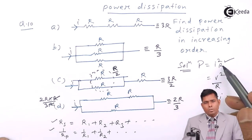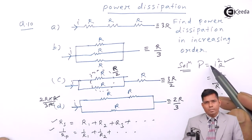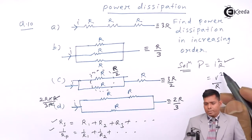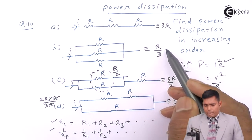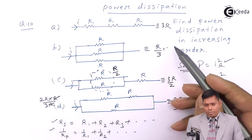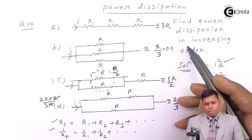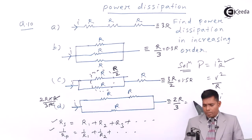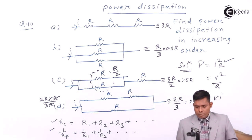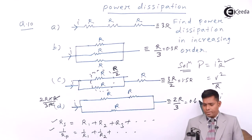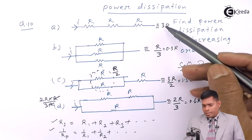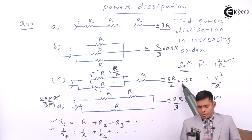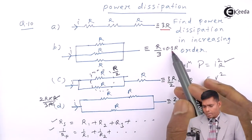Out of the four combinations, we check which has the highest resistance. Combination A = 3R, combination B = R/3 ≈ 0.33R, combination C = 3R/2 = 1.5R, and combination D = 2R/3 ≈ 0.67R. So A has the highest power, followed by C, then D, and B has the least.